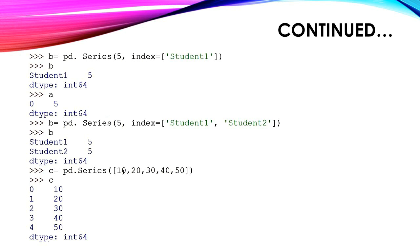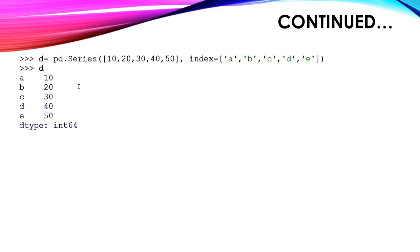Another example: creating a series with the help of a list. c = pd.Series([10, 20, 30, 40, 50]). A list is always passed in square brackets. To print the series, write the variable name c. The output is 10, 20, 30, 40, 50 in a single column as it is a one-dimensional array, with index positions starting from 0 by default. We can also assign index labels a, b, c, d, e using the index attribute.